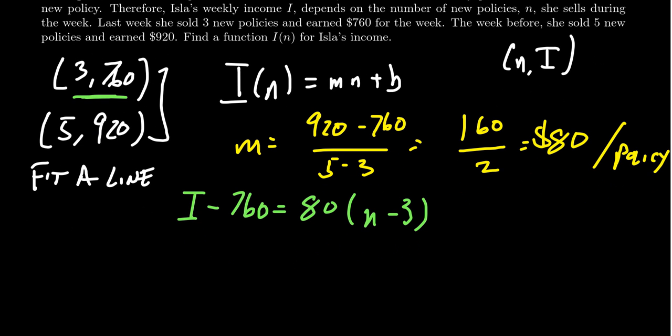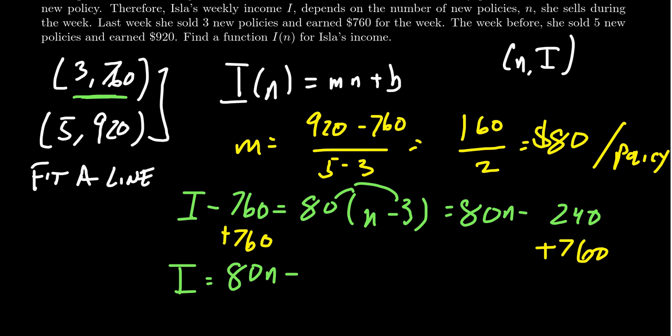That's what we're going to get right there. And so putting this into slope intercept form, we'll distribute the 80. This is going to give us 80n minus two hundred and forty. And then we want to add the seven sixty to both sides. Add seven sixty. And so then we get that the slope intercept form would look like y equals 80n. And then I guess it's a plus here. You're going to get seven sixty take away two hundred and forty, which is five hundred and sixty.